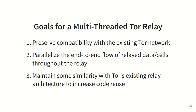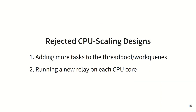We aim to preserve compatibility with the existing Tor network — relays using our multi-threaded design should be drop-in replacements for existing relays. Our multi-threaded architecture should parallelize the end-to-end flow of relayed cells and maintain some similarity with Tor's existing architecture in order to increase the amount of code we could reuse. We considered two approaches: first, offloading expensive parts of cell processing into individual tasks for Tor's thread pool, but this offers limited scalability. The second approach was to run multiple Tor relays on the same server, but this has the same drawbacks as adding more relays to the network and limits the relay's ability to load-balance connections across CPU cores.